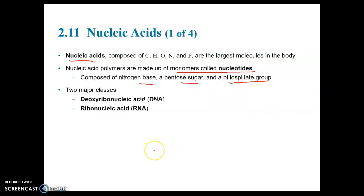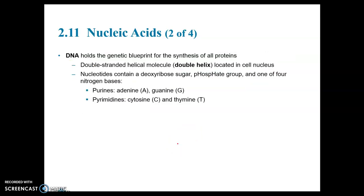The two major classes of nucleic acids are DNA, or deoxyribonucleic acid, and RNA, or ribonucleic acid. DNA holds the genetic blueprint, and what each piece of DNA or each gene does is it codes for the synthesis of a specific protein. In that way, it helps determine our traits.